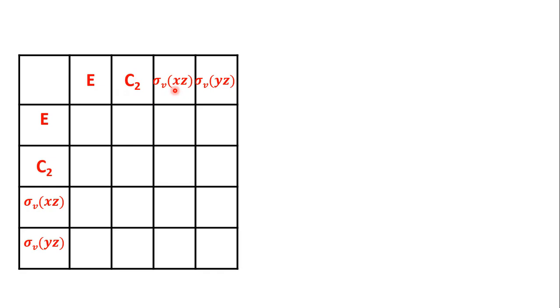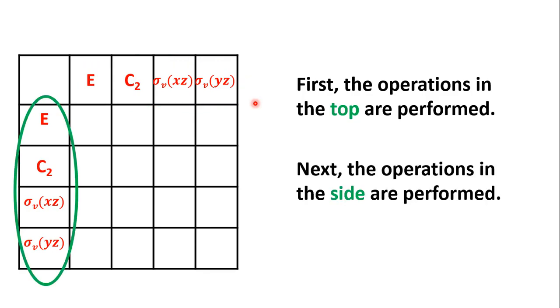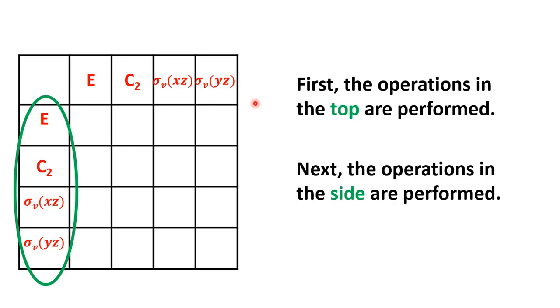In the group multiplication table, the column headers are the symmetry operations E, C2, σVxz, σVyz. Similarly, the row headers are E, C2, σVxz, and σVyz. Normally, the operations on the top are performed first, followed by the operations on the side. That is, operations on the top are performed first, operations on the side are performed next.